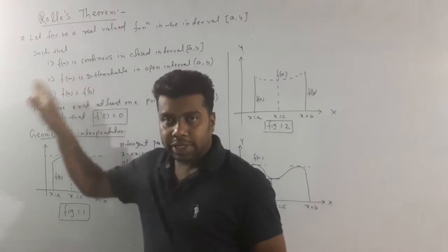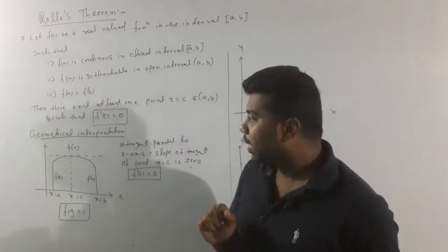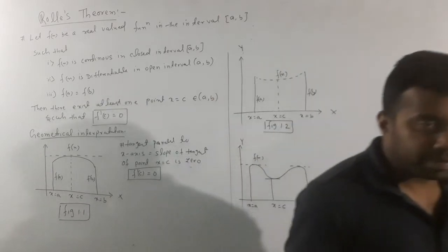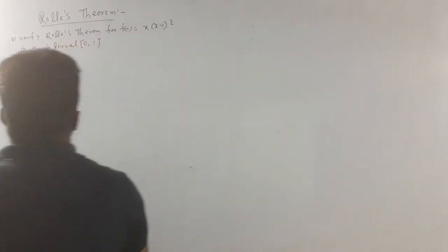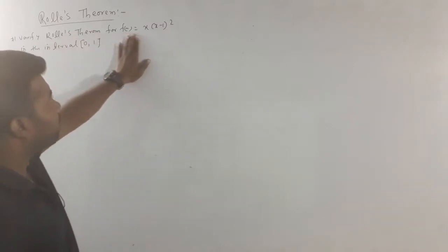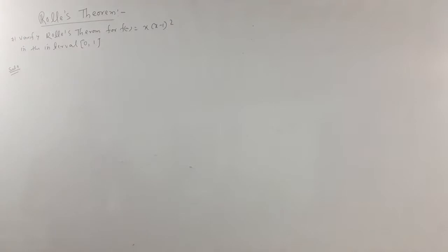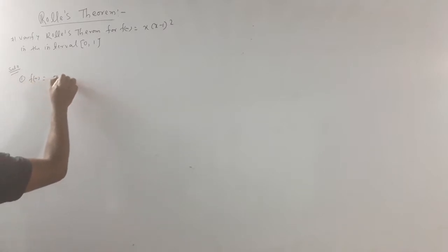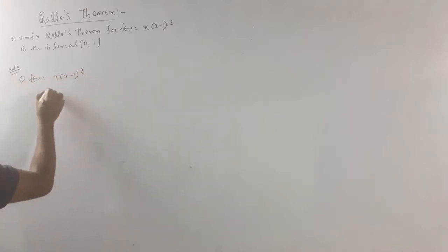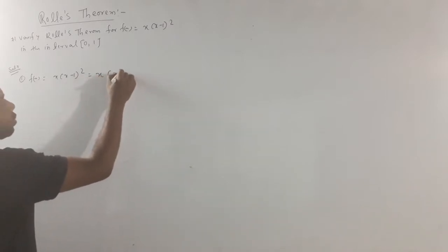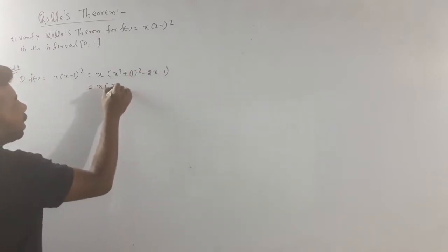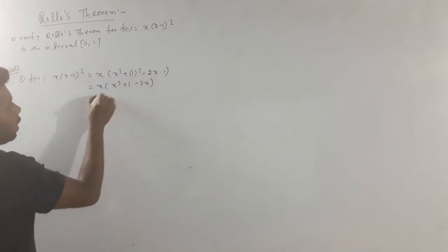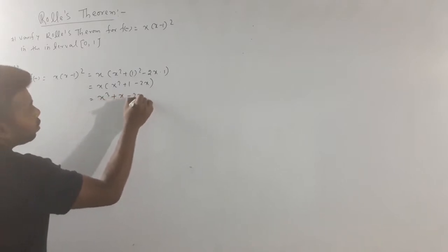What do we do? Bit by bit, the three points will be satisfied and the zero value will be found. So, you have to write the three steps. Step 1: f of x is equal to x into (x minus 1) whole square. We simplify: using a minus b whole square equals a squared plus b squared minus 2ab, we get x into (x squared plus 1 minus 2x).